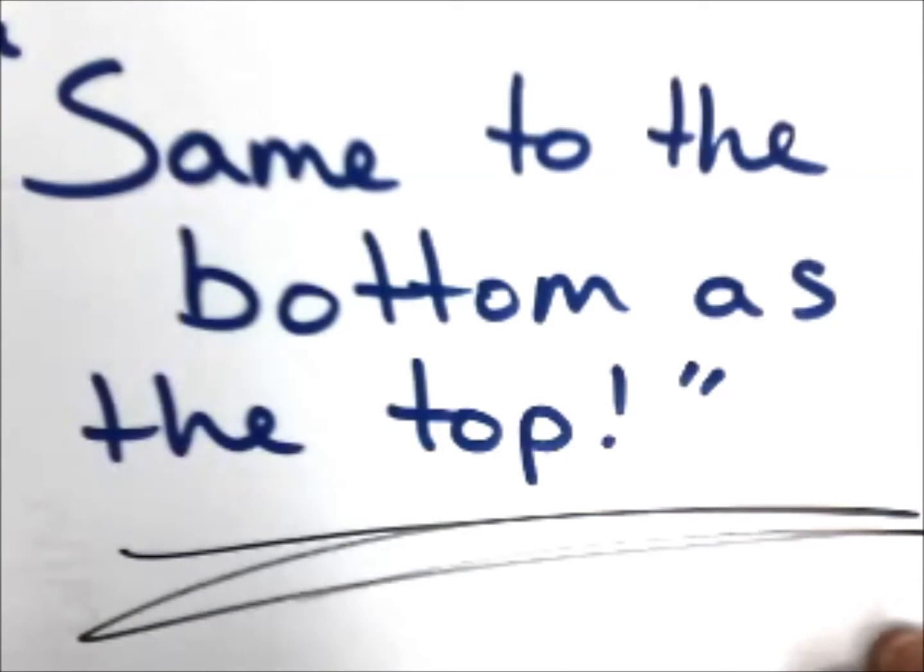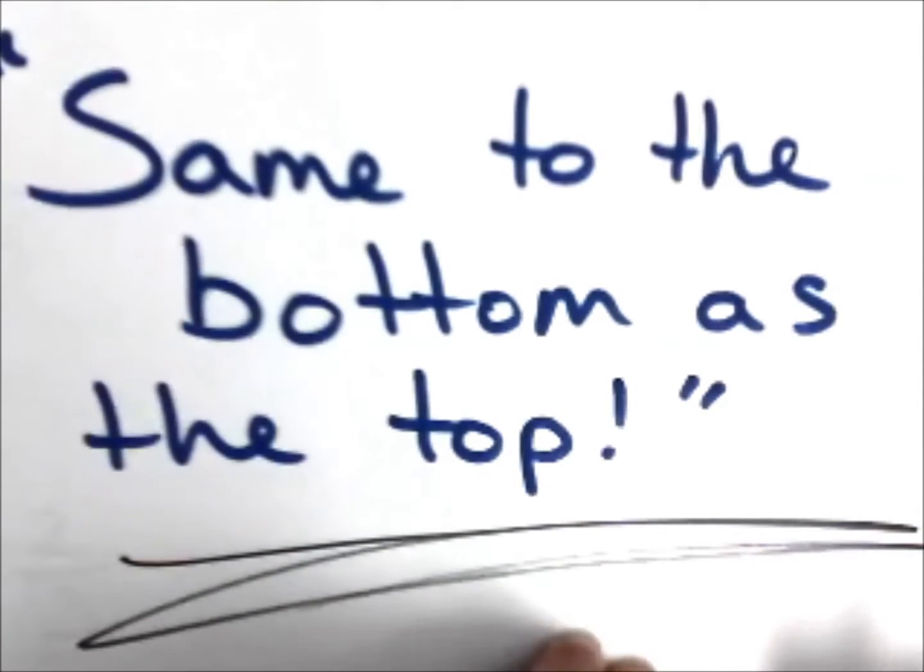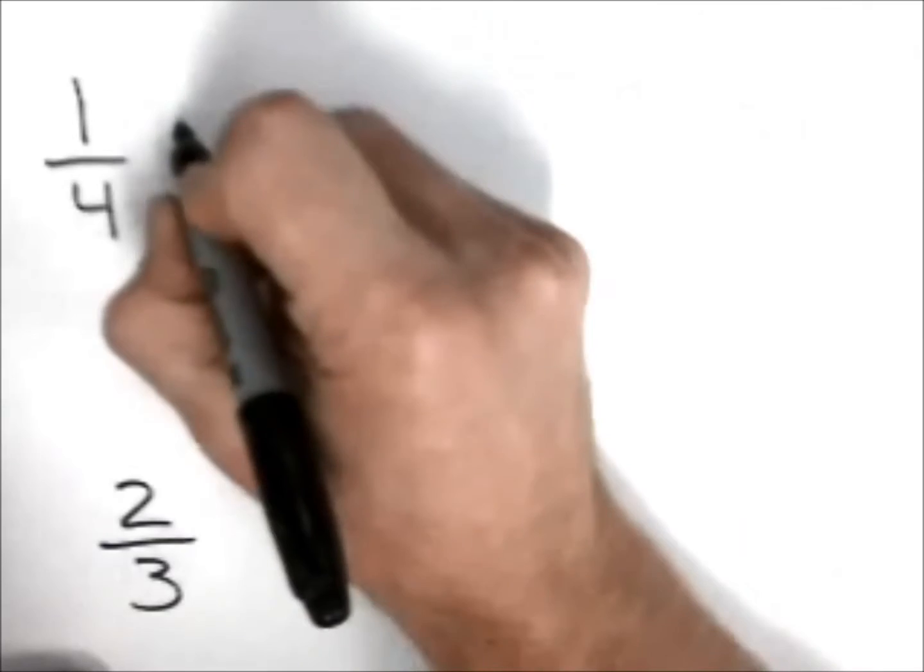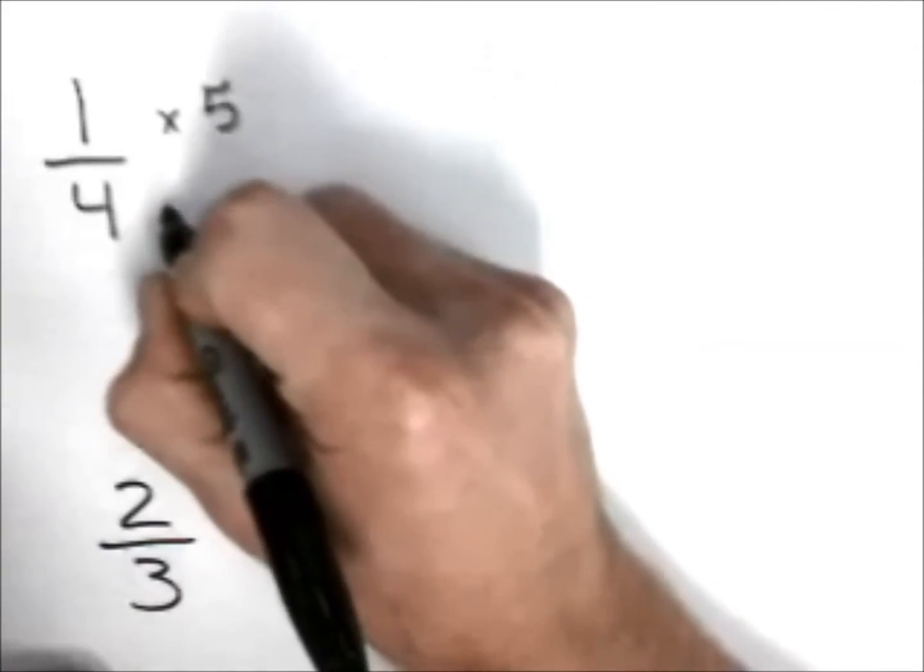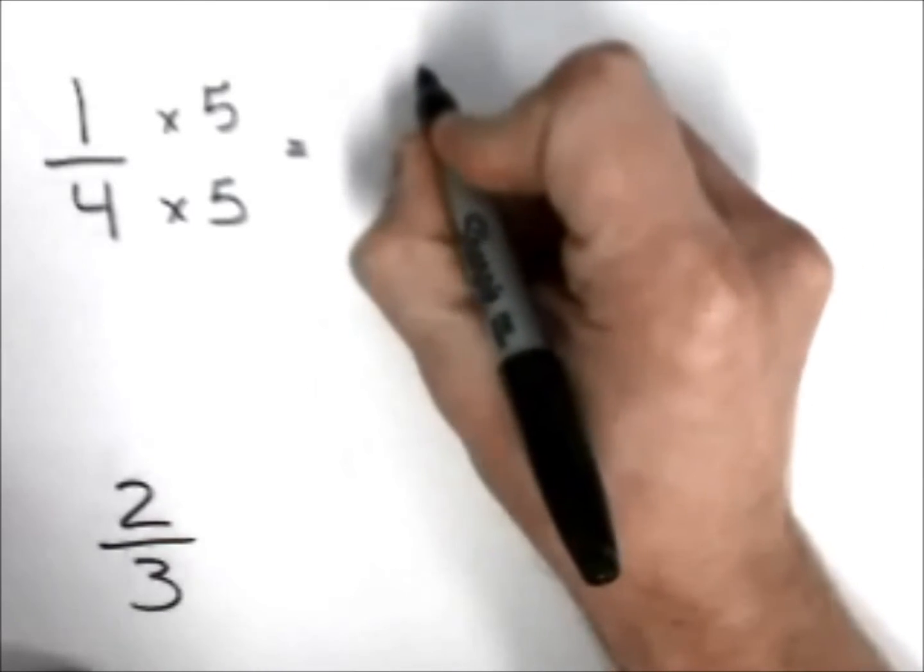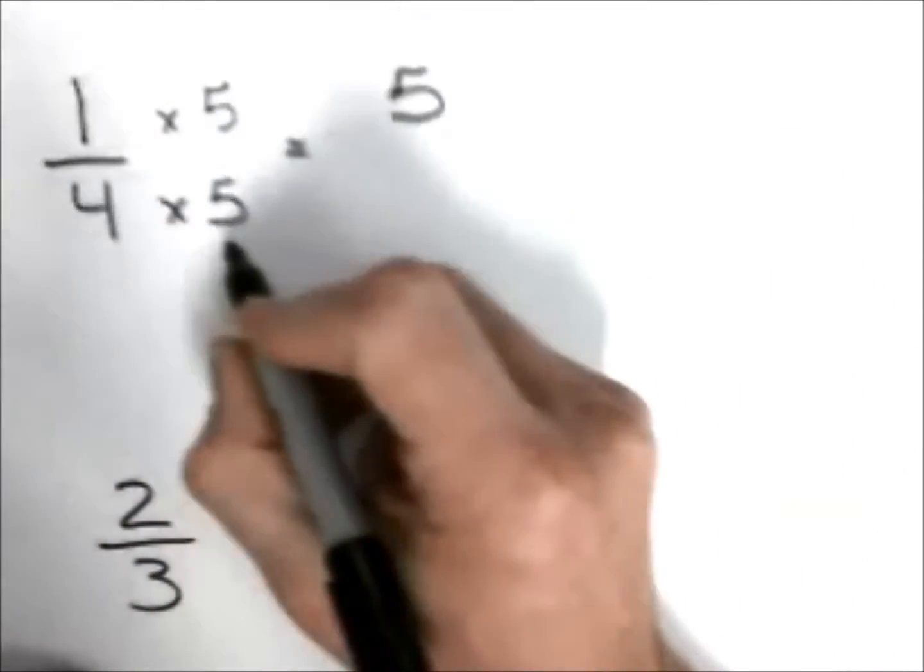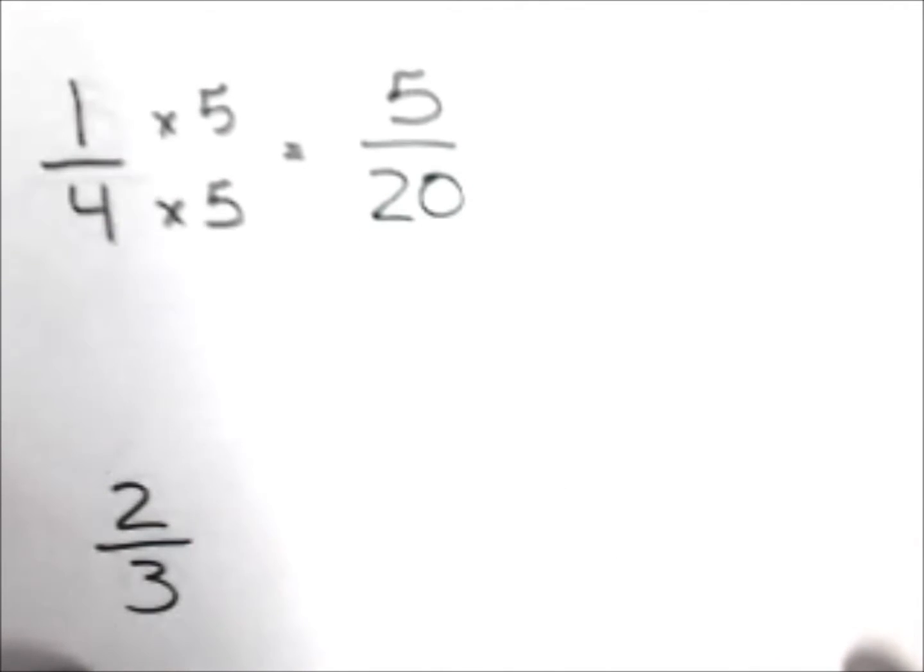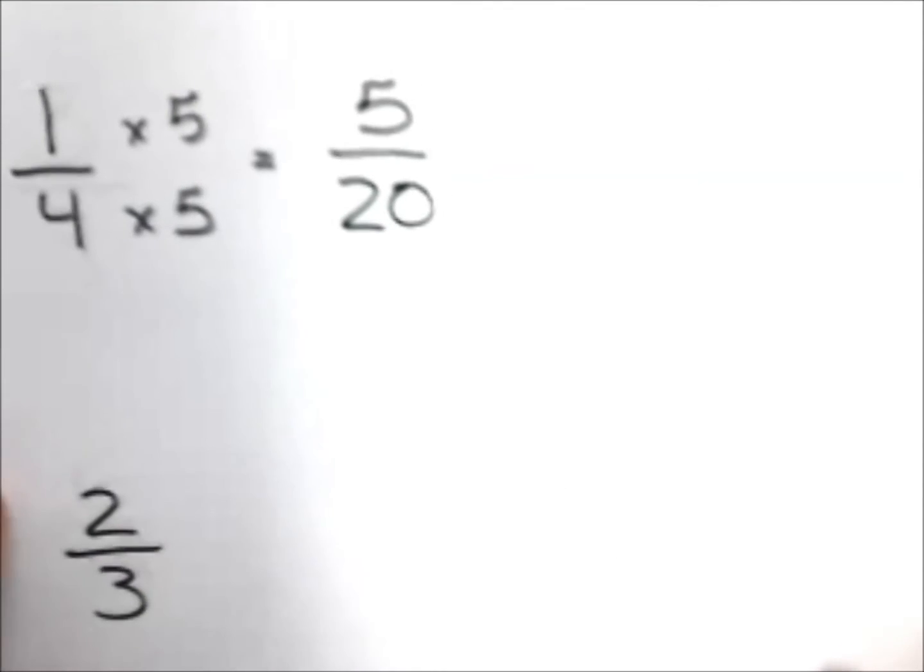Today we are going to work with the examples one-fourth and two-thirds. One-fourth, known as a quarter: one as a numerator, four as a denominator. I am going to use a multiplier of five and do the same to the bottom as the top. One times five is five, and four times five is twenty. So we can say one-fourth is the same as five-twentieths.